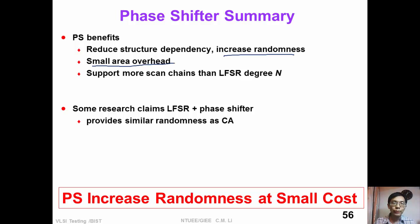Also, the phase shifter is able to support many scan chains, more scan chains than the LFSR degree. And some researchers claim that LFSR with phase shifter provides similar randomness as cellular automata.